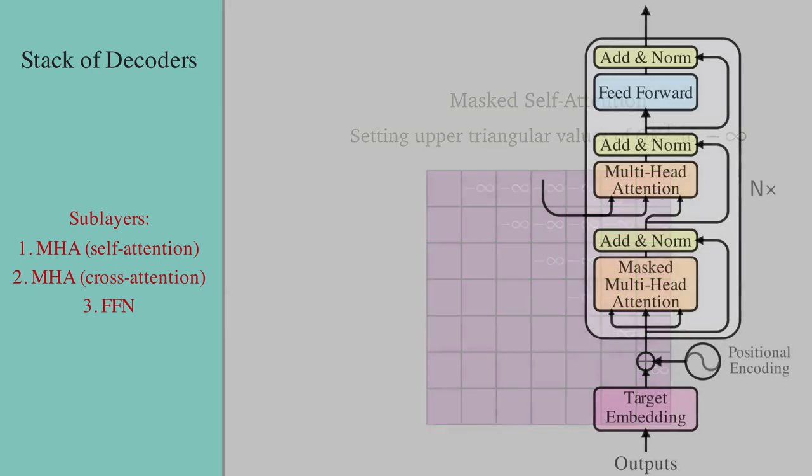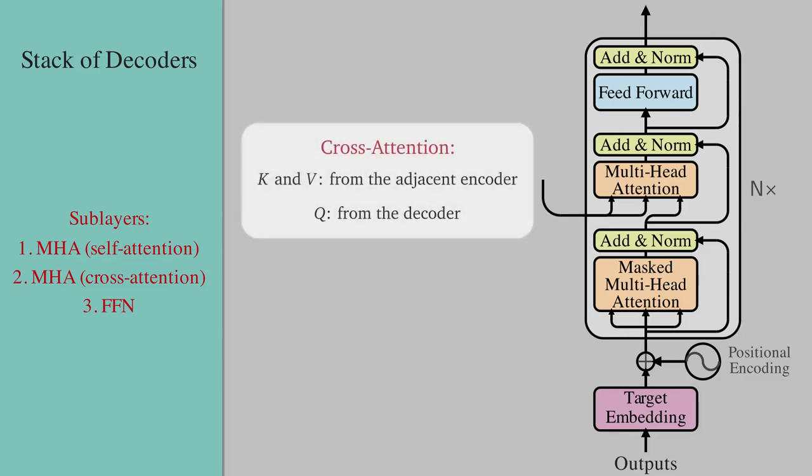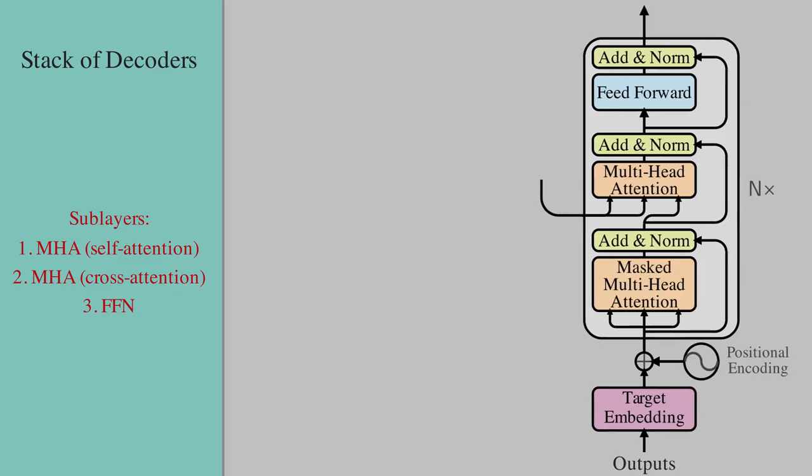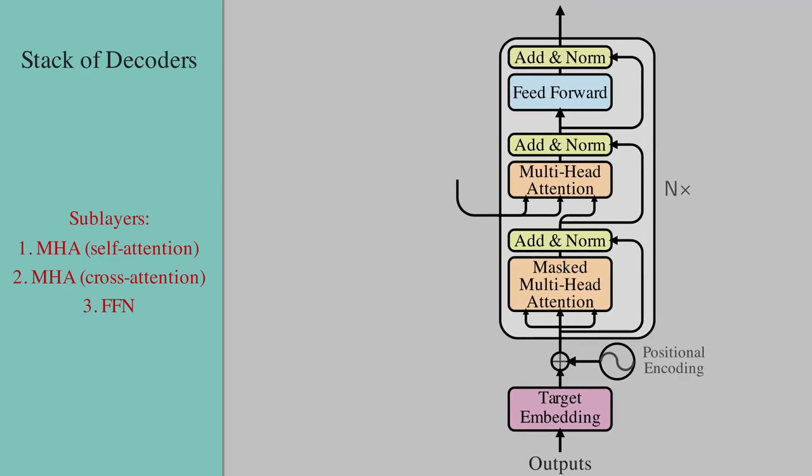Moving to the cross-attention sublayer, this cross-attention receives the key and value vectors from the adjacent encoder layer and the query from the preceding multi-head self-attention sublayer. The rest including the residual connections and the FFN sublayer are the same as described in the encoder. At the final decoder layer, we add an additional linear layer followed by softmax to get the probabilities of the predicted tokens. So that basically wraps up the encoder decoder transformer architecture.